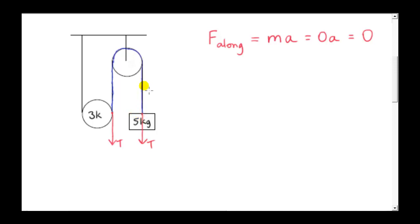Now we apply Newton's third law. The force on this end of the string due to the five kilogram mass is T down, so the force on the five kilogram mass due to the string must be T up — equal but opposite. Similarly, the force on this end of the blue section of the string due to the remainder of the string is T down, so the force on the other section due to the blue part must be T up.